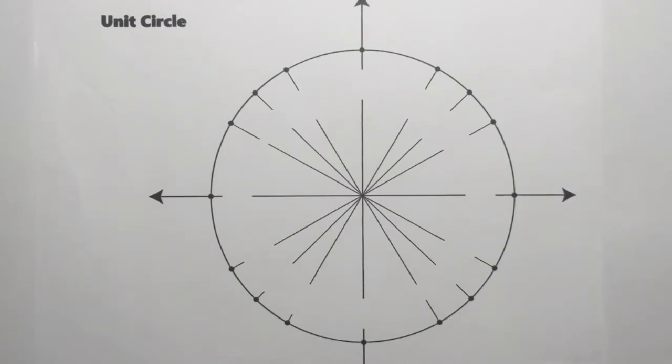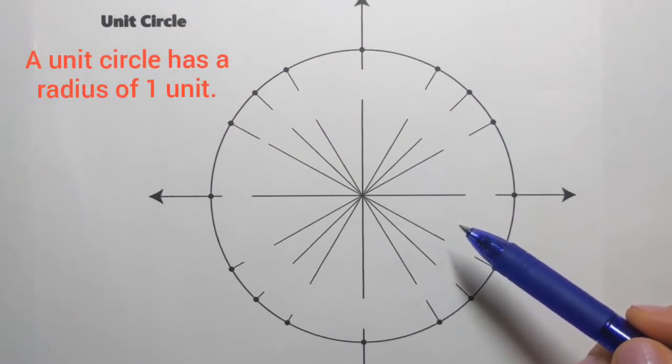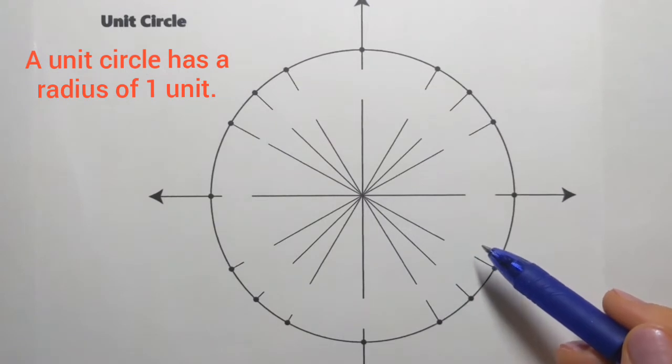But first, what is the unit circle? Well, it's a circle that has a radius of length one unit, one arbitrary unit. And that unit can be an inch, a meter, yard, centimeter, or one of many other units of length.